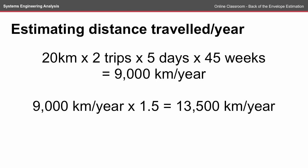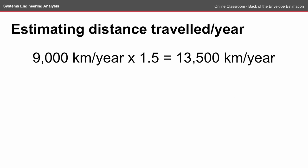If we put in a factor to allow for extra travel outside of the direct path between work and home, we might multiply the 9,000 kilometers per year by 1.5, ending up with approximately 13,500 kilometers per year. That's a good estimation of how far I might travel to and from work each year.